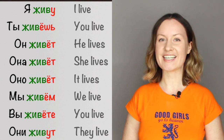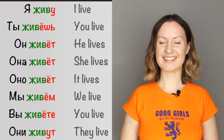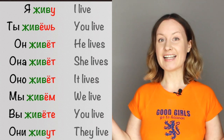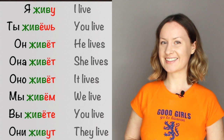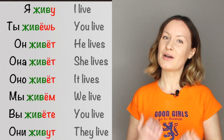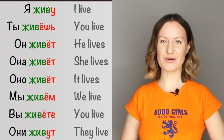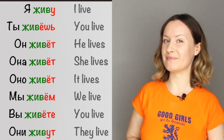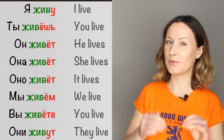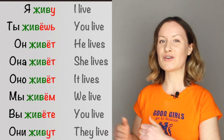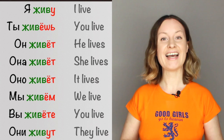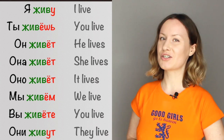'She lives' — она живёт. 'It lives' — оно живёт. 'We live' — мы живём. 'You live,' formal and plural — вы живёте. 'They live' — они живут.